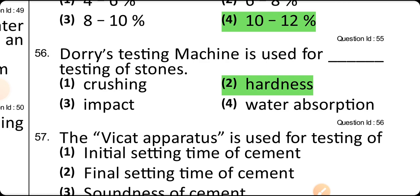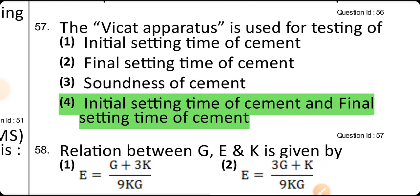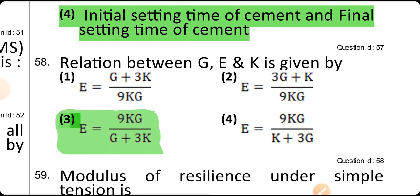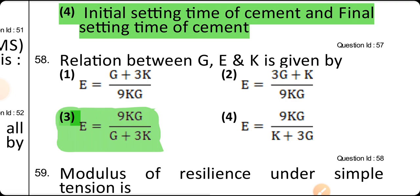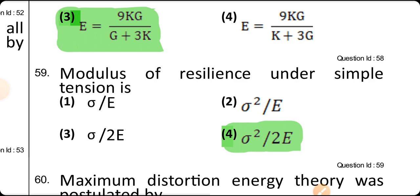The Deval test machine is used for testing stone — that is the hardness test. The Vicat apparatus is used to check the initial and final setting time of cement. The correct elastic relation is E = 9KG/(G + 3K). Modulus of resilience under simple tension is σ²/2E, which is the amount of energy absorbed by a body up to its elastic limit.